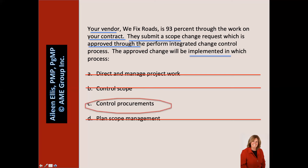Remember, approved change requests are not only an input of Direct and Manage Project Work, but they're also an input of Control Procurements. The question is implying that the approved change request is related to the contract with the vendor, and therefore it gets implemented in Control Procurements. Plan Scope Management doesn't make sense here.